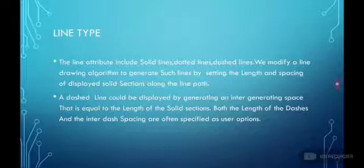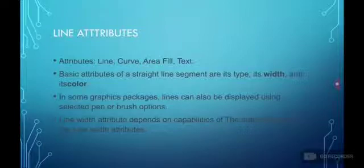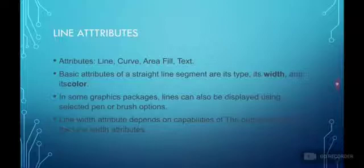the length of the solid sections. Both the length of the dashes and the inter-dash spacing are often specified as user options. Line attributes — line, curve, area fill, text — are basic attributes of a straight line. The segment attributes are its stripe, its width, and its color. In some graphics packages, lines can also be displayed using selected pen or brush options. Line width attributes depend on the capabilities of the output device.